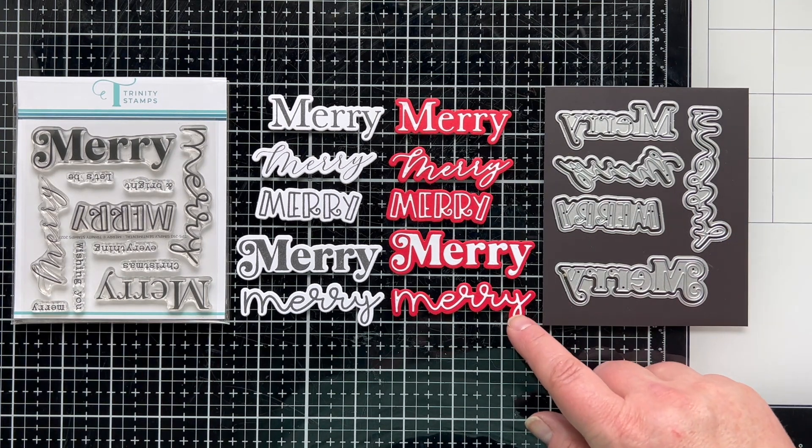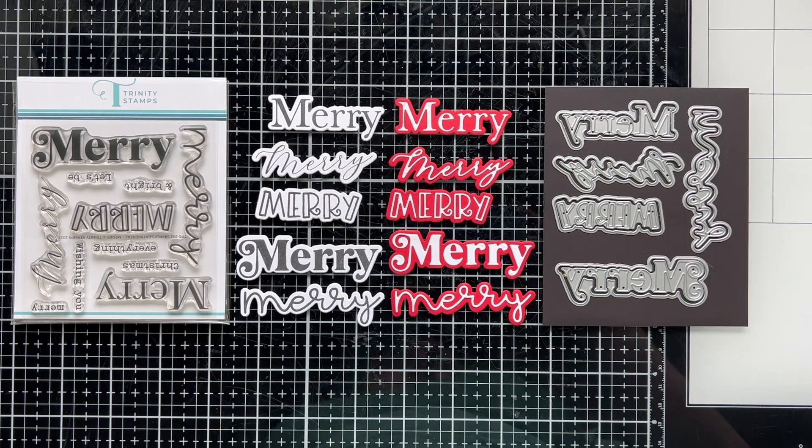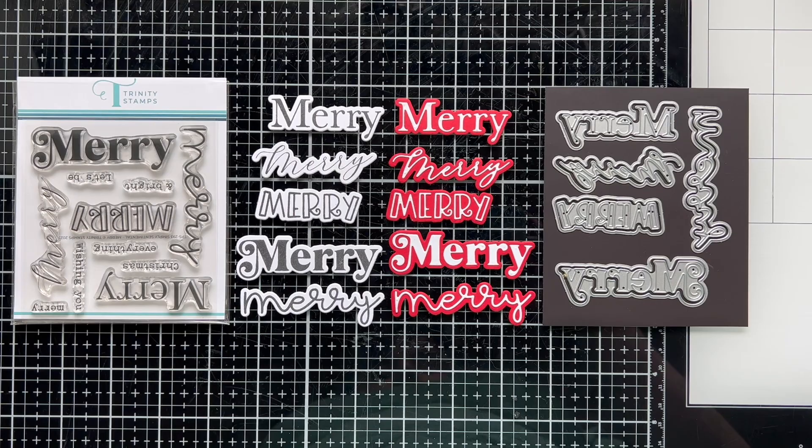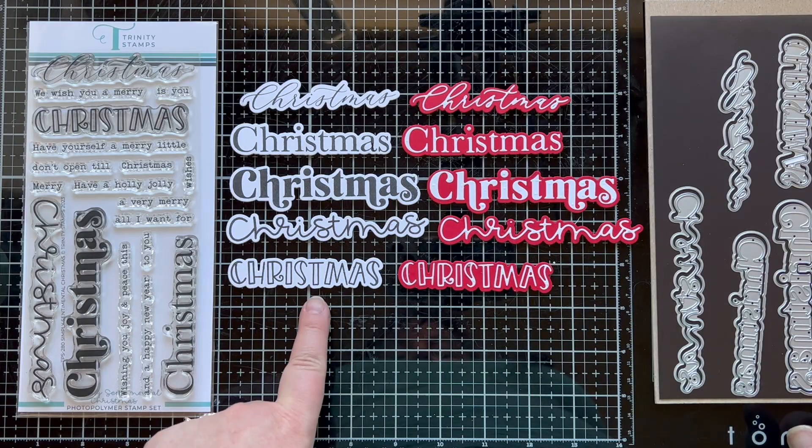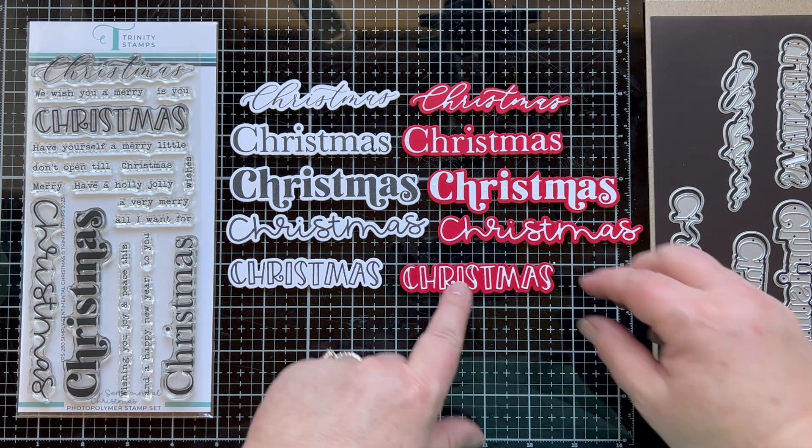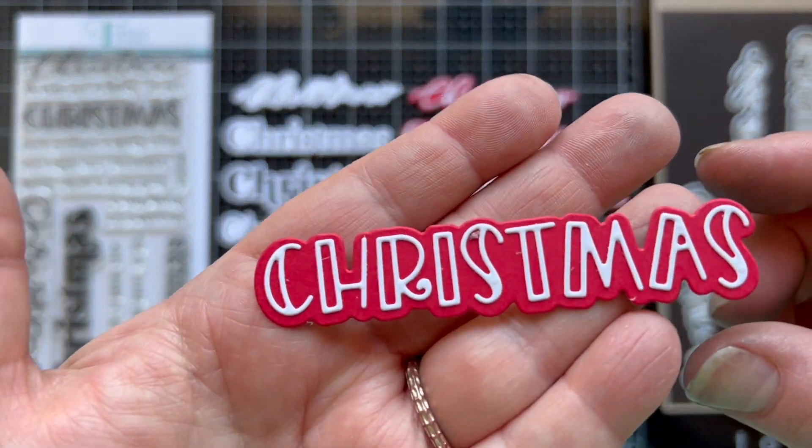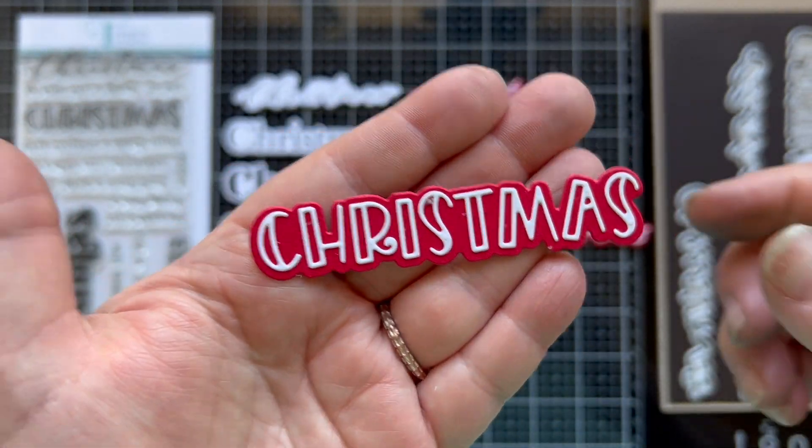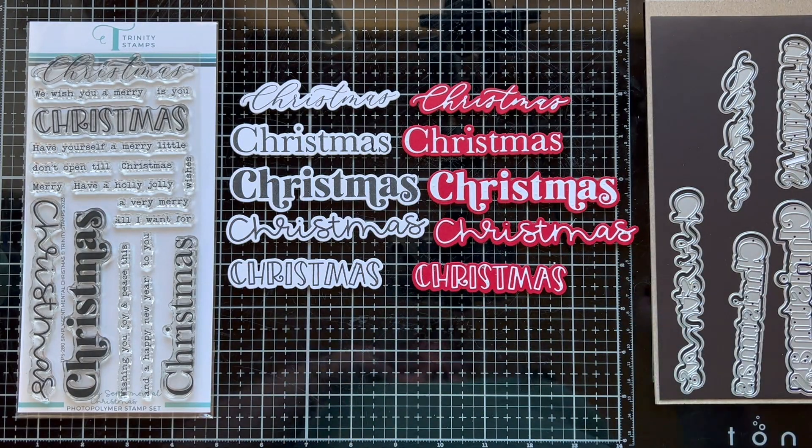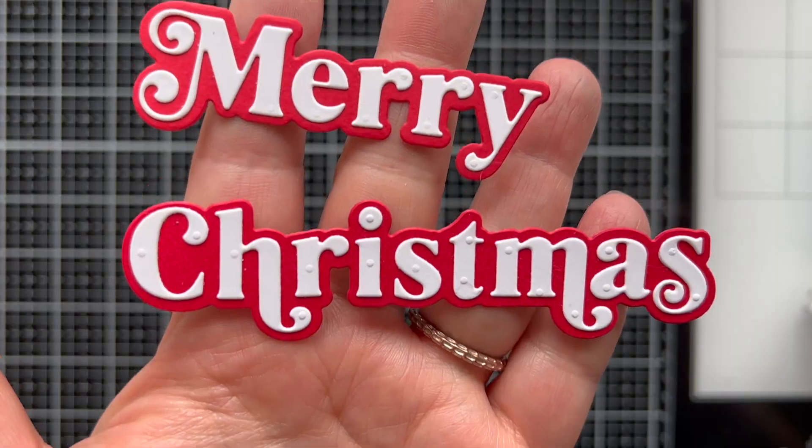What you're seeing is our simply sentimental merry set. I'm going to use the die cut version where it's red with white letters and then we have simply sentimental Christmas. They both have the same fonts so you can mix and match the merry and the Christmas or you can use the sub sentiments in the stamp set.